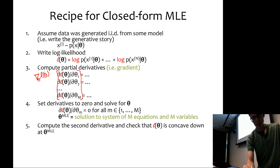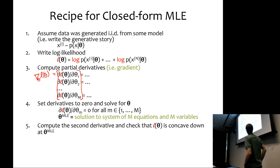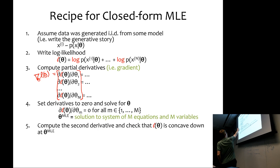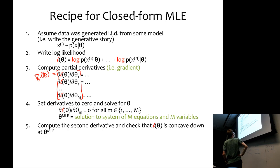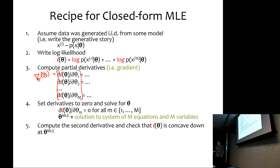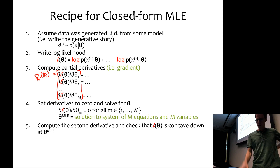From there, we assume that our parameters theta are some vector, and we compute partial derivatives with respect to each parameter — theta 1, theta 2, up to theta m. If we bracket those partial derivatives, we have a gradient: the gradient of the likelihood with respect to theta. We could then set that gradient equal to the zero vector and solve for theta, giving us the maximum likelihood estimate.